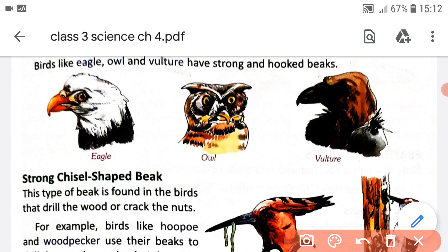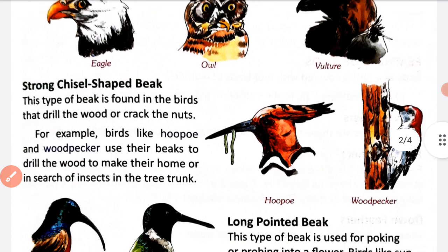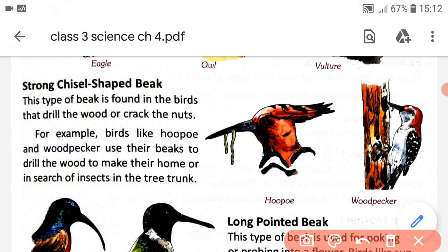The second type of beak is the strong chisel-shaped beak. This type of beak is found in birds that drill wood or crack nuts. This type of beak is used for drilling wood. Birds like hoopoe and woodpecker use their beaks to drill wood. In this picture, a woodpecker is drilling the wood.